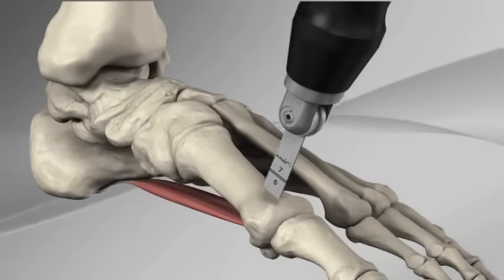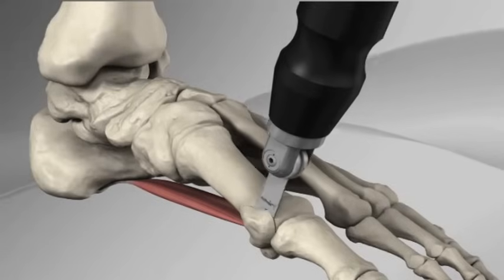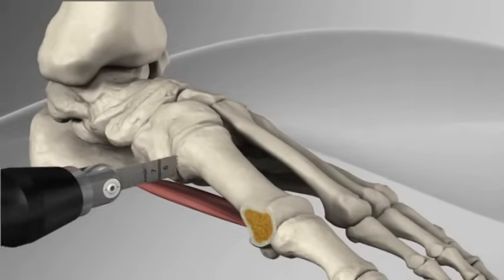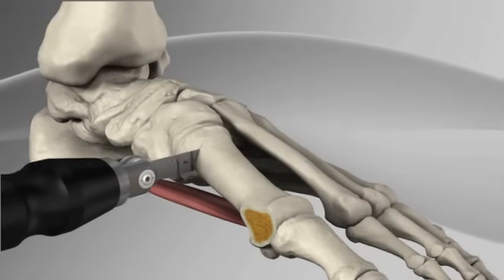A saw blade is used to remove the prominent bump on the inside of the big toe. The saw is then used to make an oblique cut in the base of the first metatarsal.